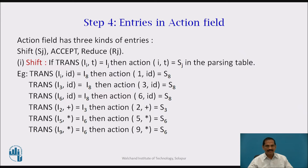Transition I6,ID equals I8, then action[6,ID] = S8. Similarly, transition I2,plus equals I3, then action[2,plus] = S3. Transition I5,star equals I6, then action[5,star] = S6. Transition I9,star equals I6, then action[9,star] = S6.